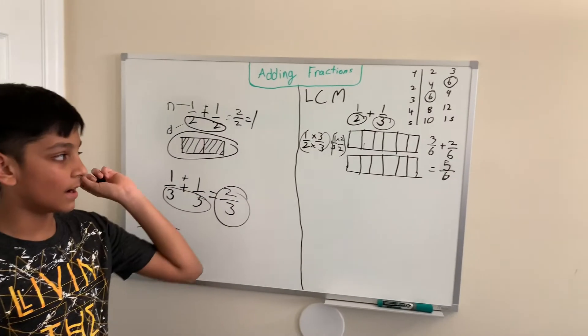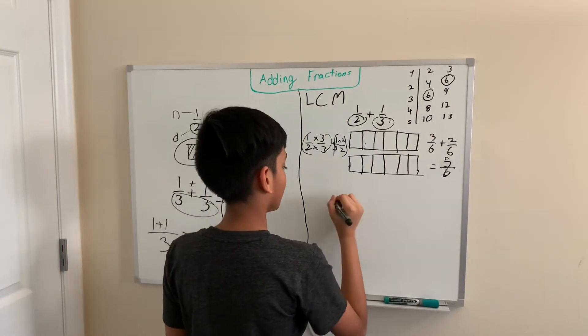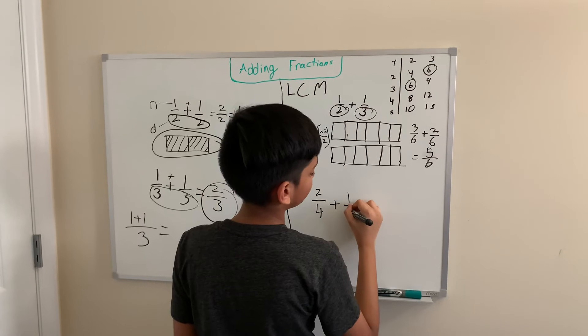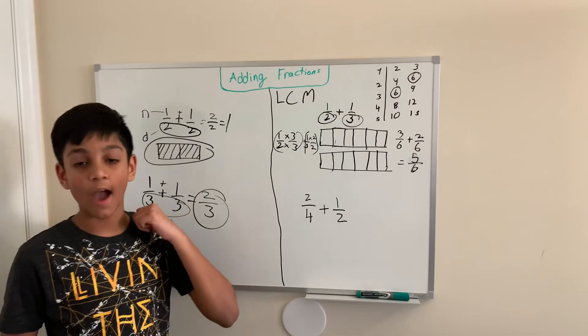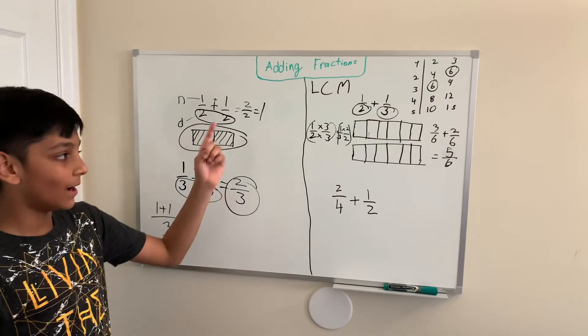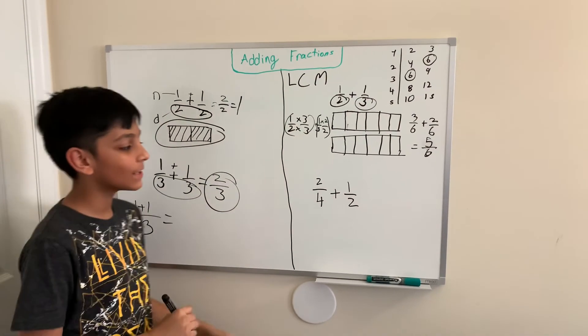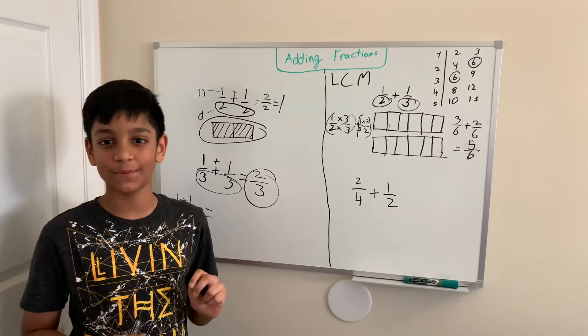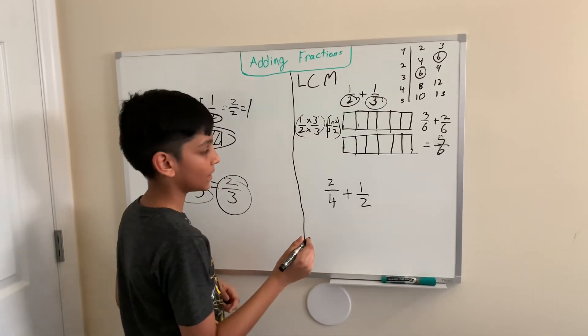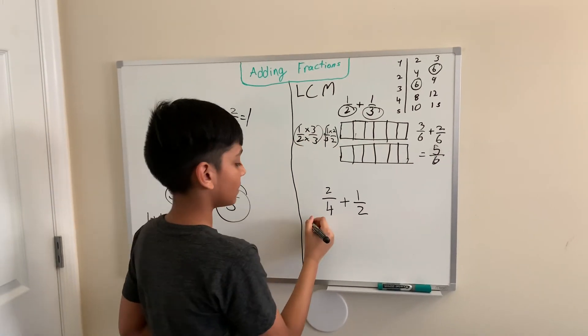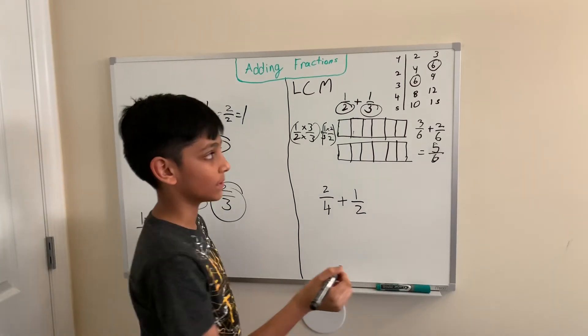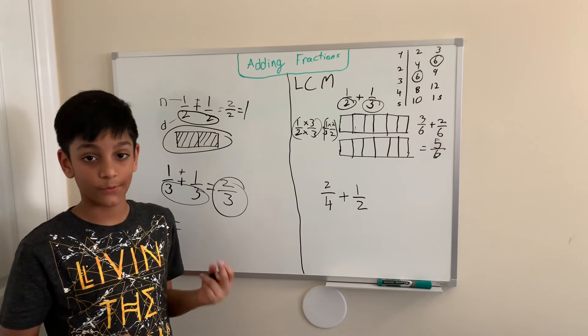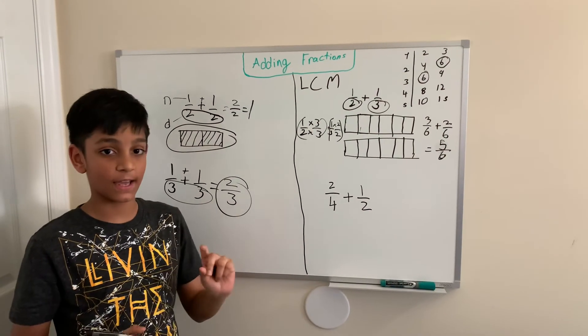Let's get another example: 2 fourths plus 1 half. Let's try to add that without drawing the rectangles. Pause this video here and try to figure it out for yourself. So, first we have to look at our time tables. For 4: 4 times 1 is 4, 4 times 2 is 8, 4 times 3 is 12, 4 times 4 is 16, and 4 times 5 is 20.